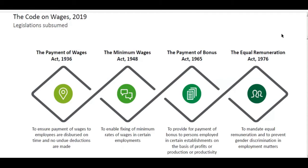The Equal Remuneration Act 1976 was specifically introduced to mandate equal remuneration and prevent gender discrimination in employment. If two people of different genders are doing the same work, the same task, and the same job, they need to be paid equally. This right of employees was protected by this act introduced in 1976.